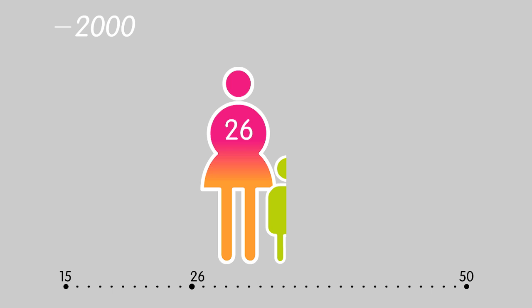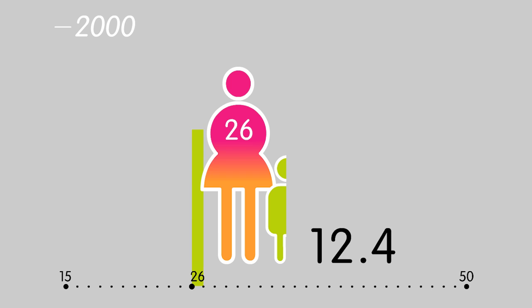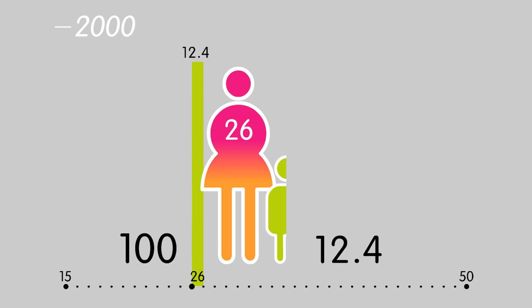Relative to the total number of women of childbearing age — 416,609 — this represents 12.4 births for every 100 women. That is the fertility rate for women in this age bracket for the year 2000.